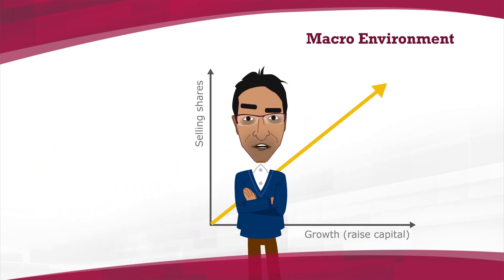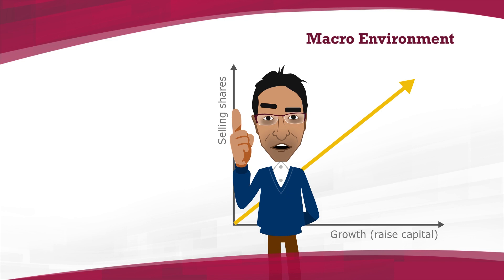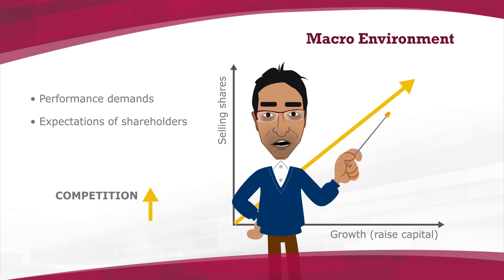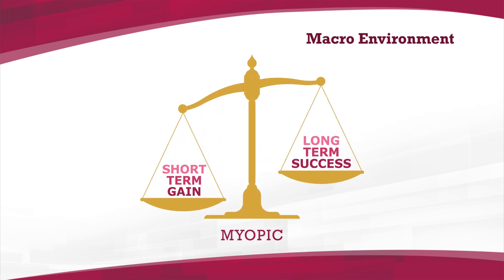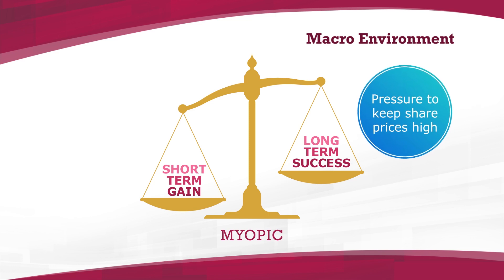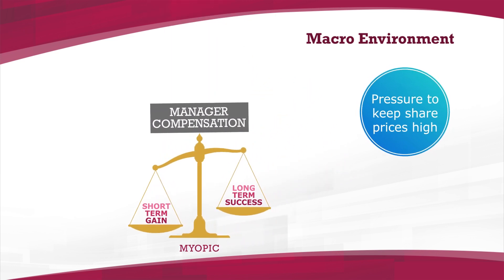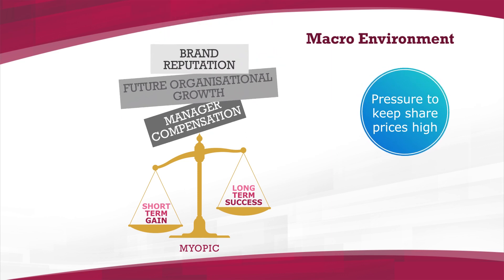Importantly, when organizations sell shares of the company, they become liable to the performance, demands, and expectations of shareholders. This pushes firms to be competitive, but also causes them to be myopic — trading long-term success for short-term gains — as the pressure to keep share prices high affects manager compensation, future organizational growth, and brand reputation.